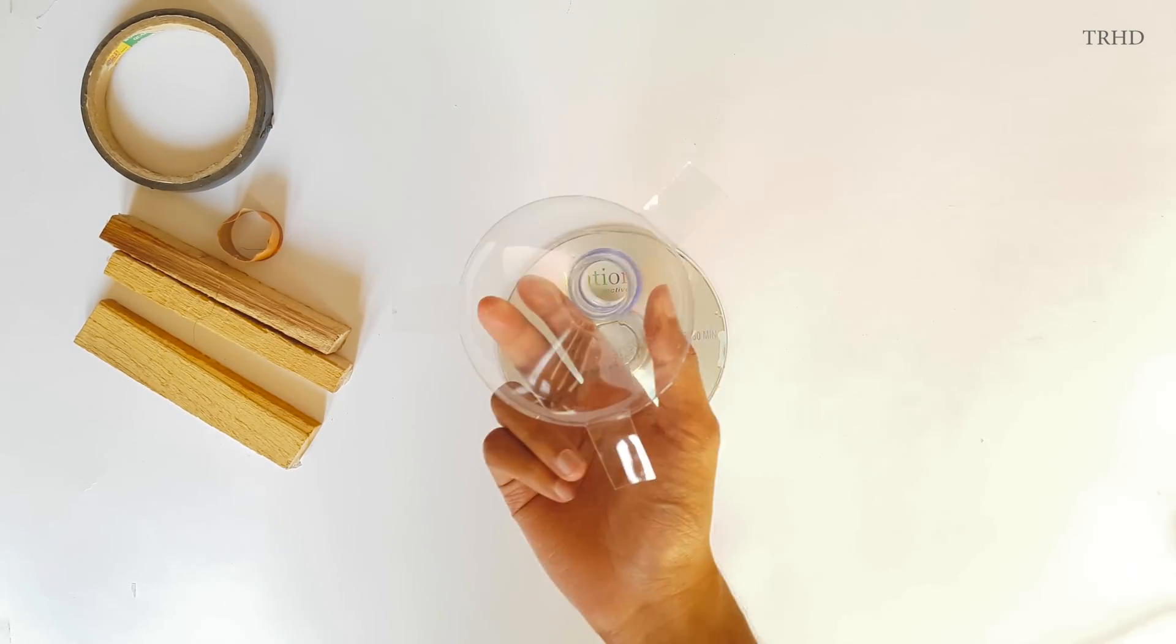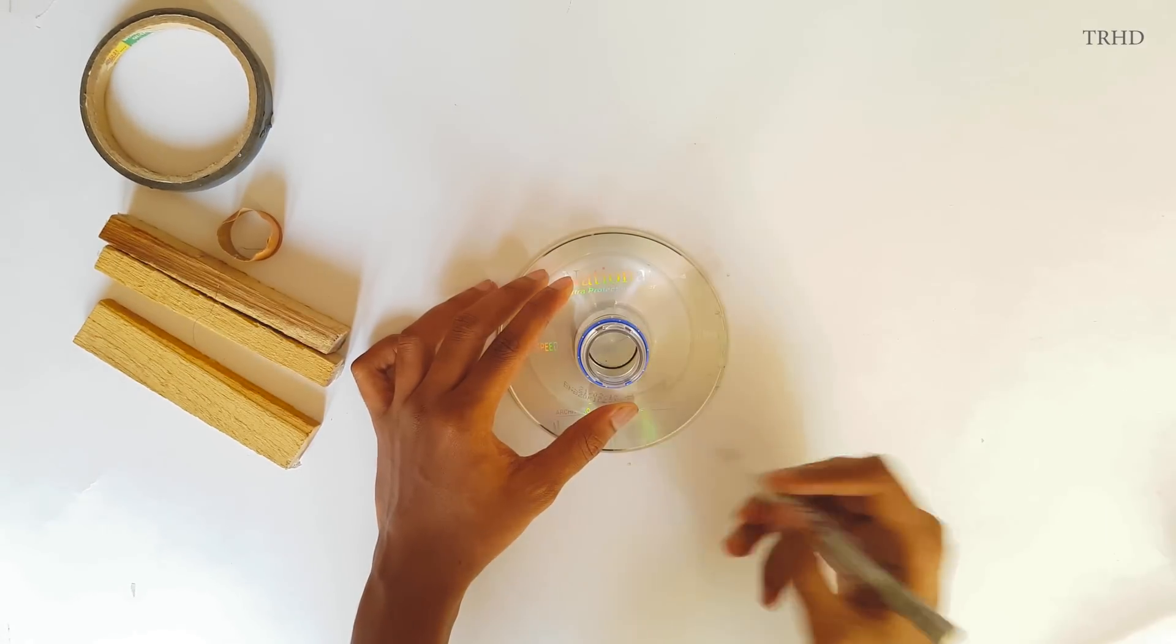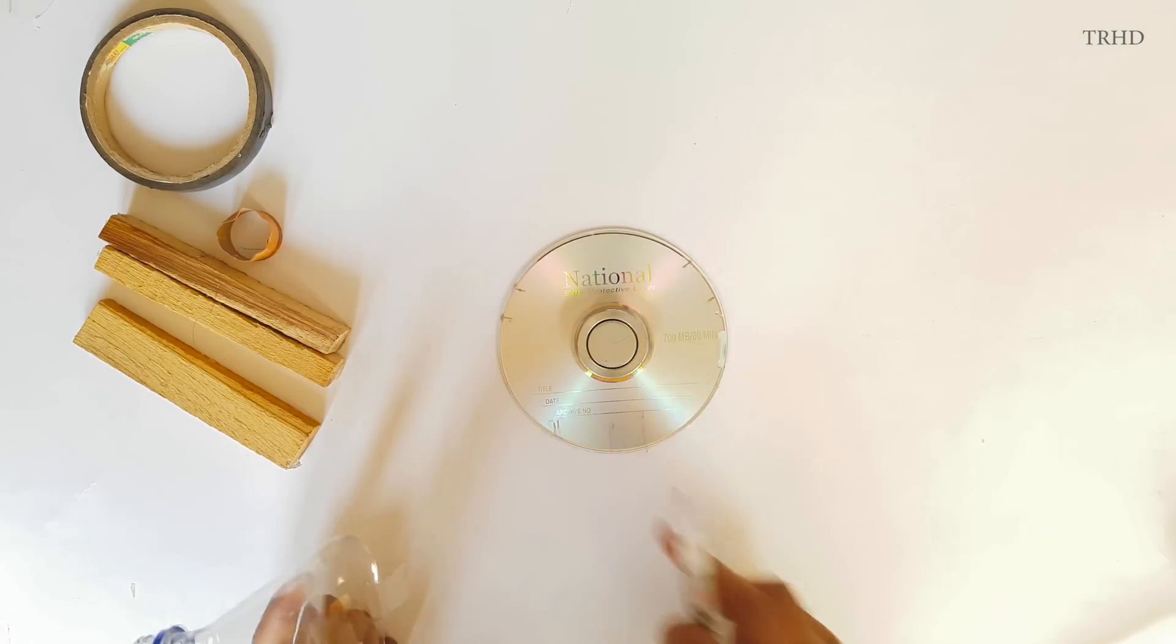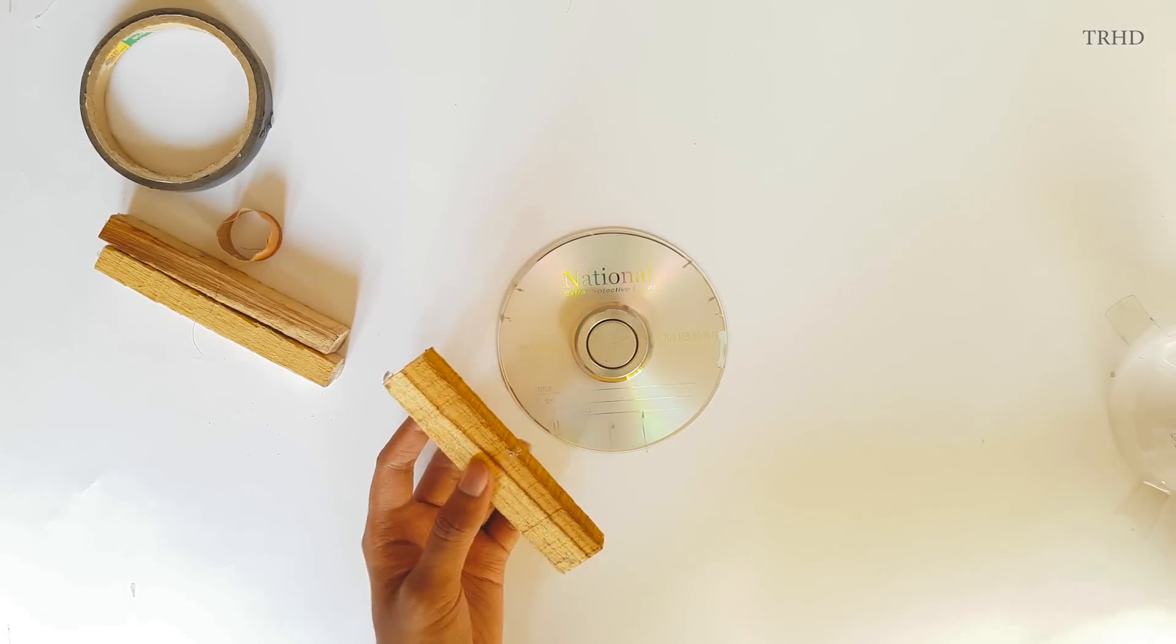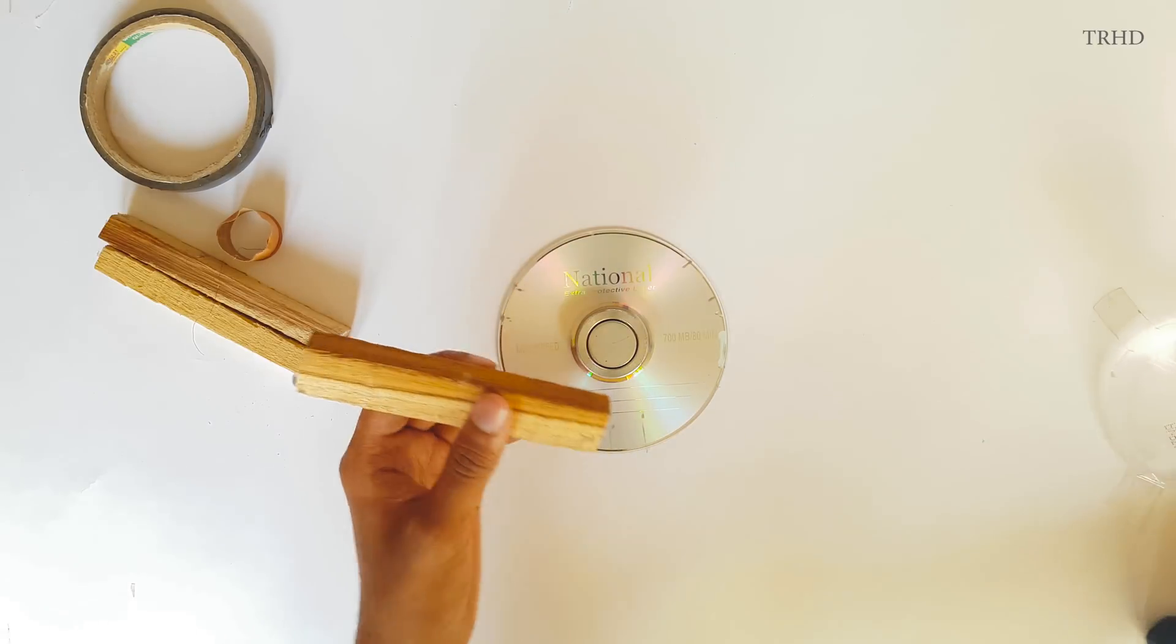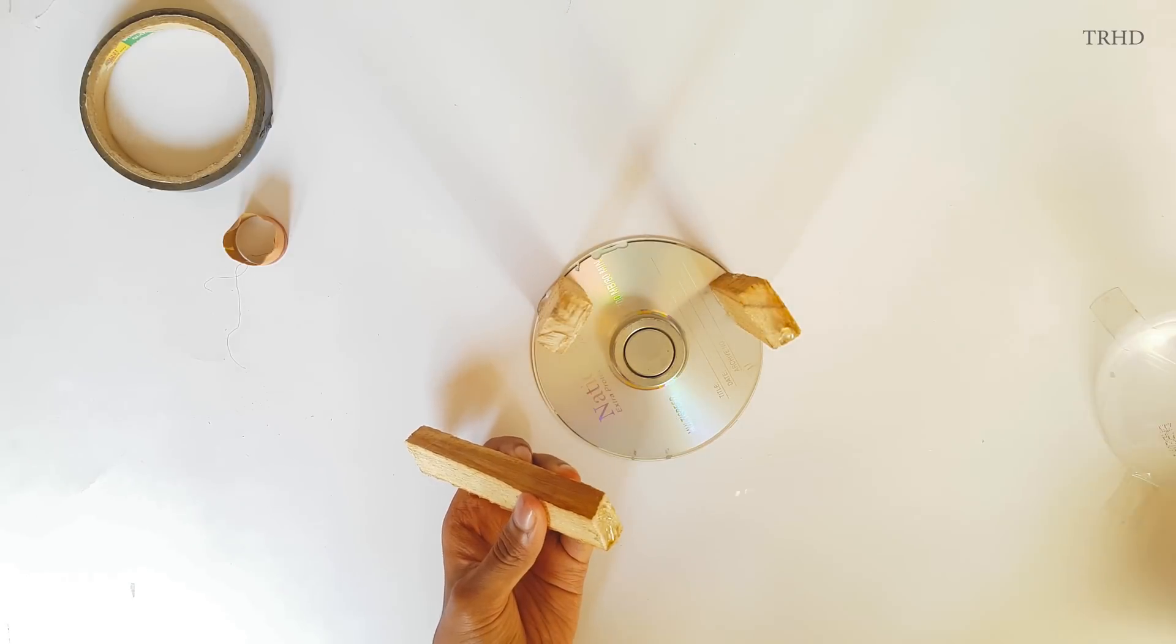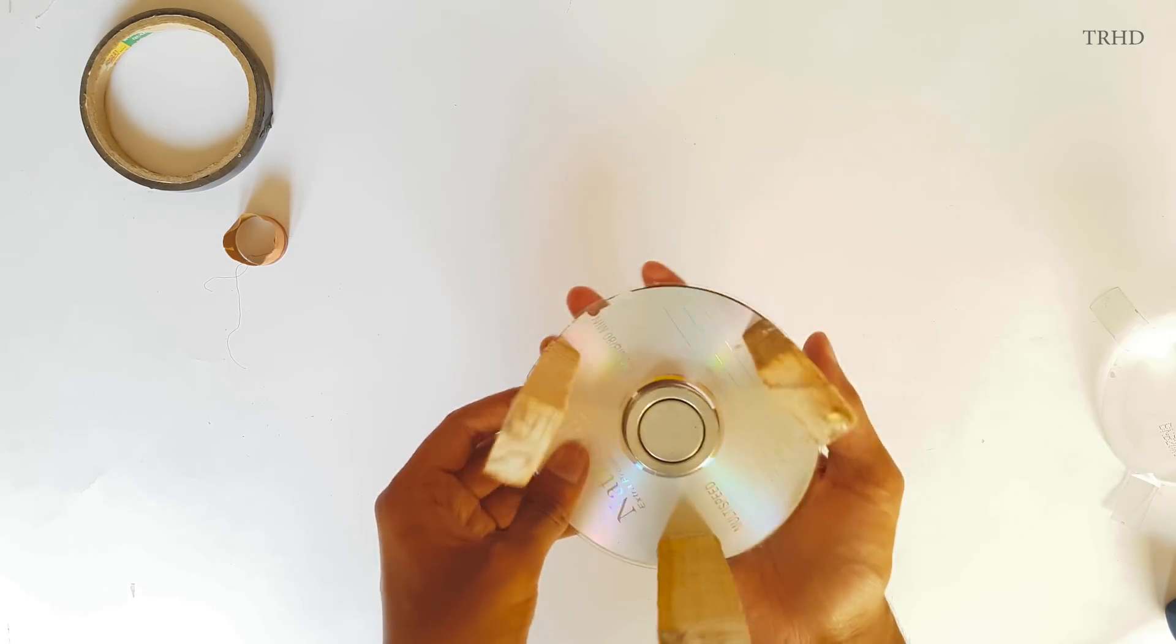Now take the plastic cone and you need to make markings so that we can fix the wooden pieces onto the CD. Use a marker and make three markings at 120 degrees. And now we need to place these wooden sticks onto the CD. Apply some glue over it and stick it like this. Follow the same procedure and stick all three wooden pieces at these positions.